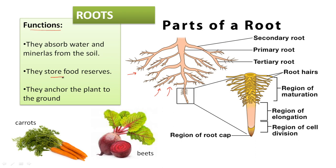Also, they store food reserves. Inside the roots, some plants can store nutrients like sugars, carbohydrates, and water — like carrots and beets. These are special roots that are very thick to preserve some energy and nutrients, so they store food reserves.